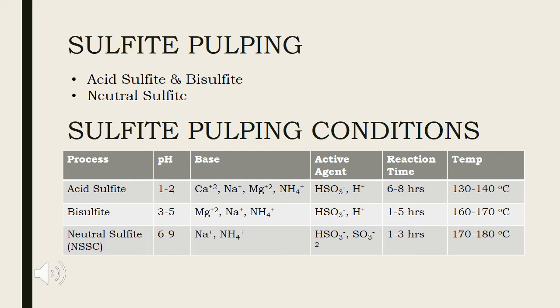Bisulfite pulping generates medium grade paper, particularly newsprint and writing paper. Neutral pulping process produces good stiffness pulp with high yield. It has corrugating medium. Corrugating medium causes the final product, which is paper, to contract into wrinkles or folds.